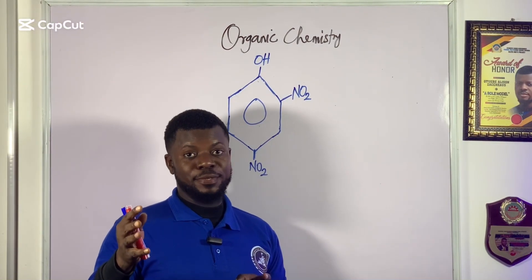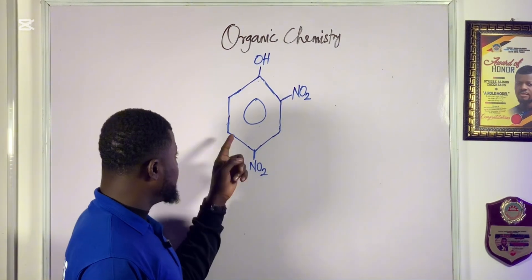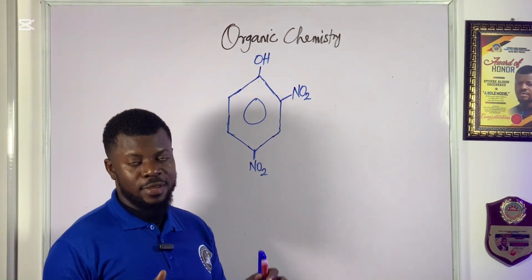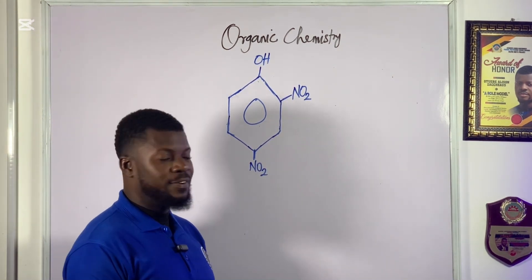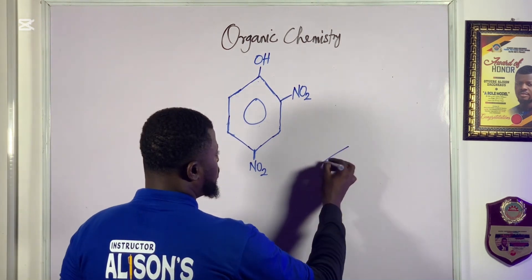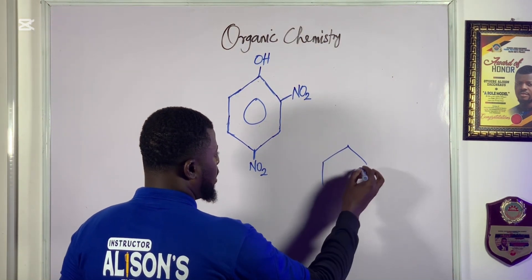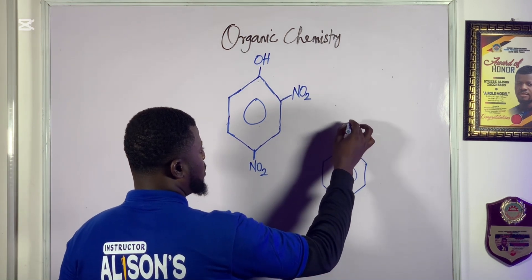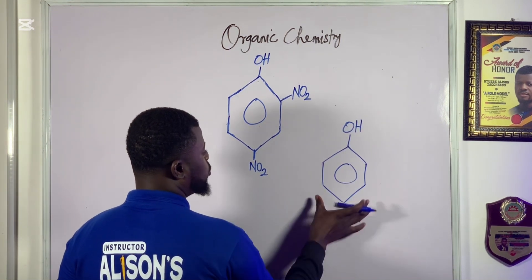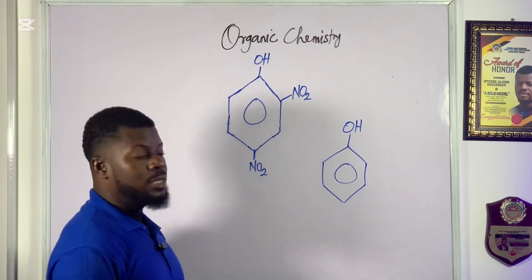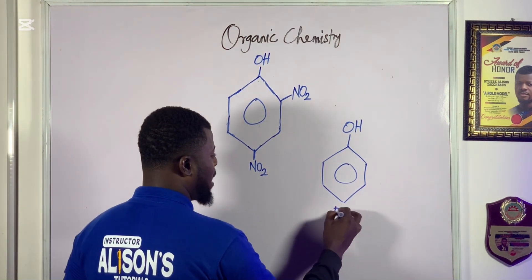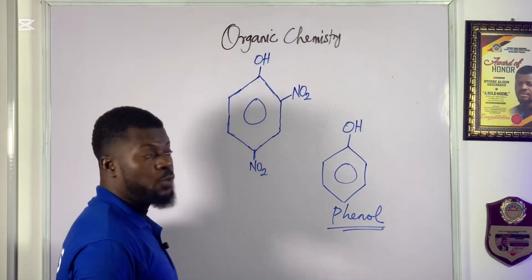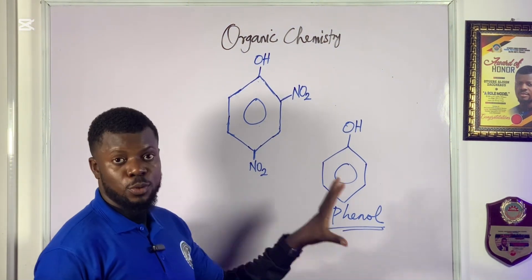Hello my friends and welcome to my organic chemistry video. In this tutorial I want to show you how to name this compound. First of all you need to identify the unique name given to any compound or molecule of this kind. Here you see OH attached to a benzene ring — such a structure is called phenol. Whenever you see this in organic chemistry, just know: this is phenol.